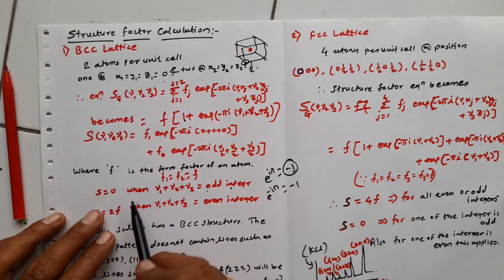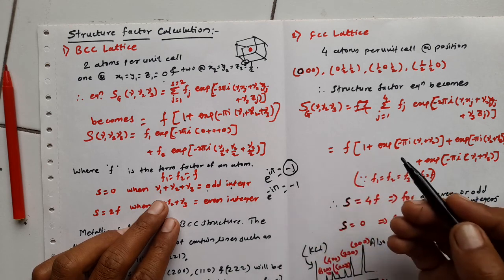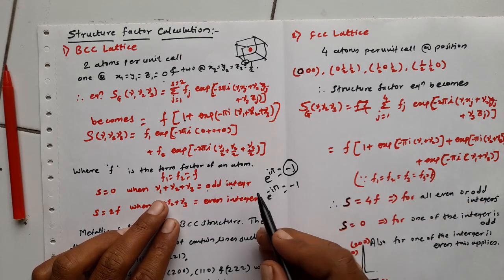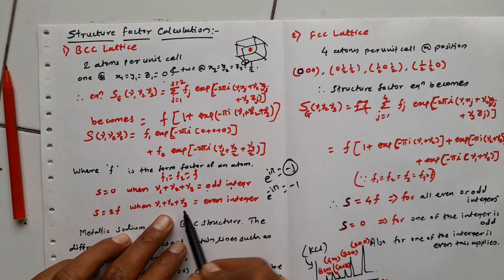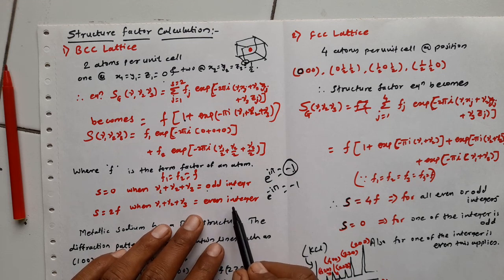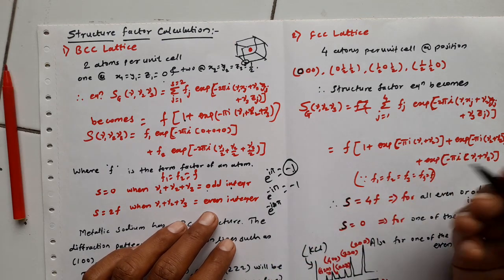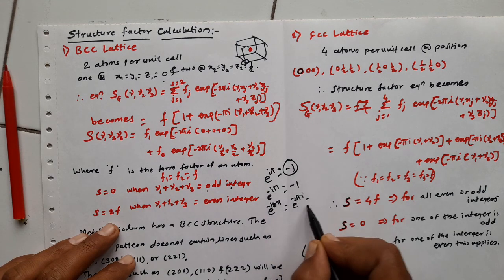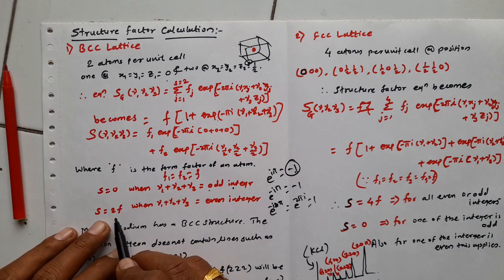The h,k,l planes — nu1, nu2, nu3 — represent the planes from which we get reflections in the diffraction pattern. In the BCC lattice, we will not get reflections where the h+k+l summation is an odd integer. For example, nu1, nu2, nu3 = 1,1,1: 1+1+1 = 3, which is odd, so from the (111) plane we will not get a reflection. Similarly, if nu1+nu2+nu3 becomes even, the structure factor becomes 2F and the intensity is proportional to 4F².